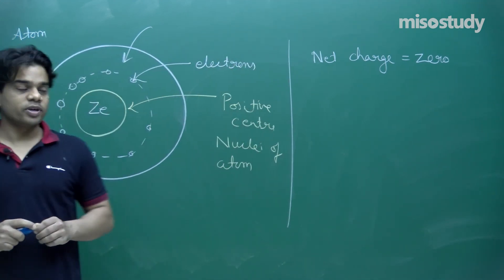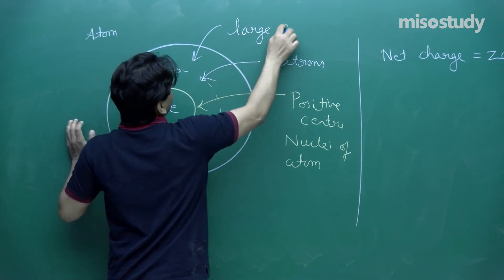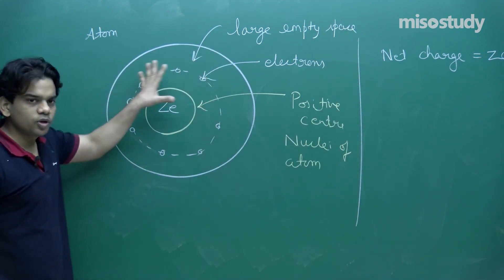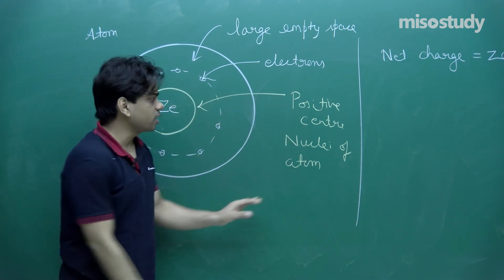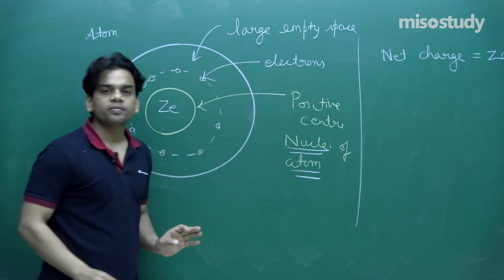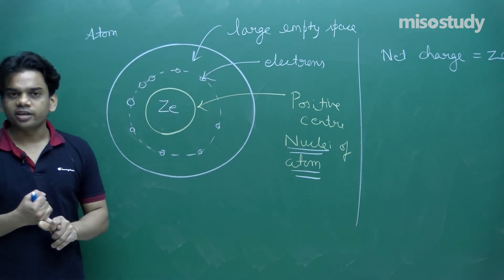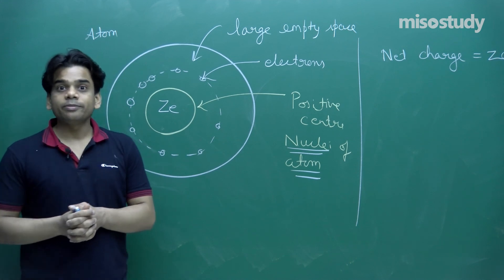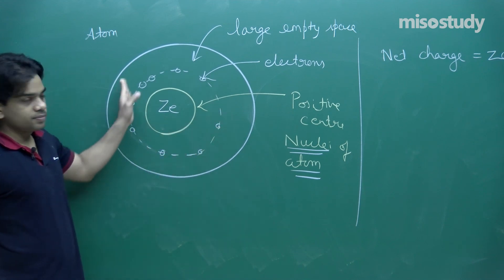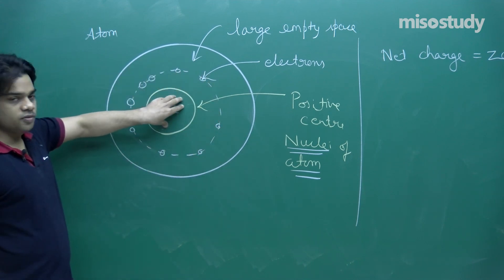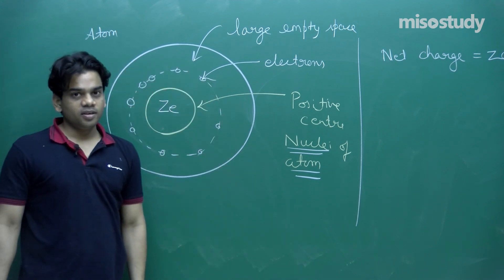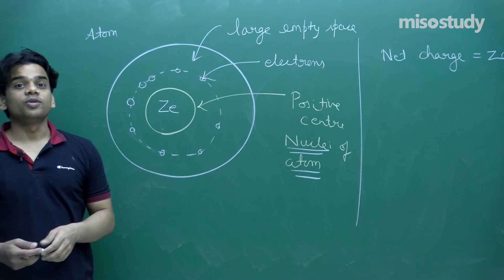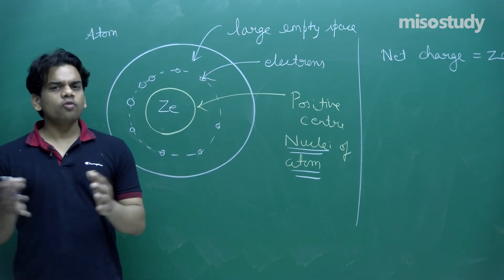This model is a layman's model — it was not based upon experiments. He actually knew that an atom may have positively and negatively charged particles. To neutralize the atom, he used the plum pudding model: positively charged particles are present, and the entire volume contains the negative charge. But the problem with this model is why it actually failed. There are certain observations which were not explained by the Thomson model.